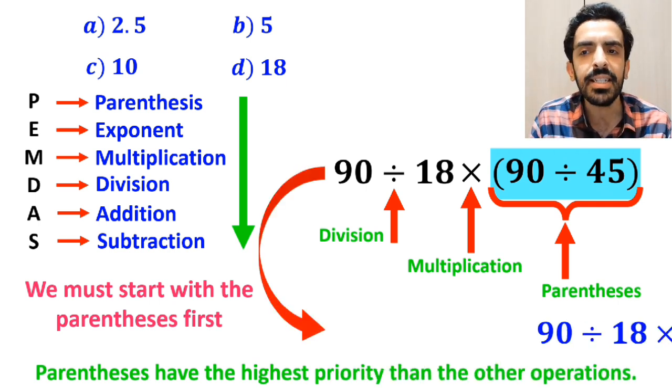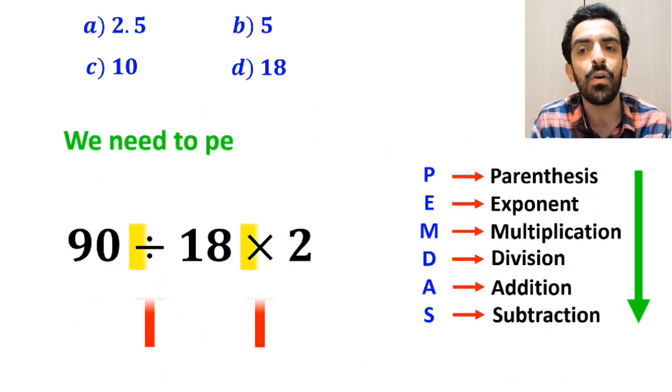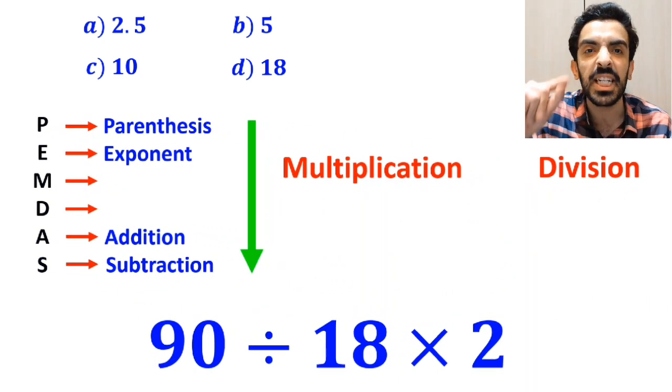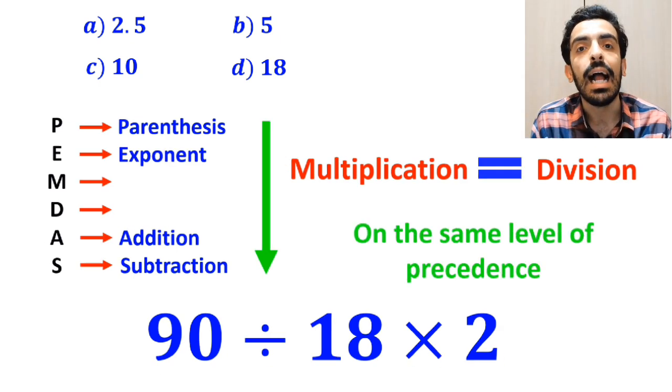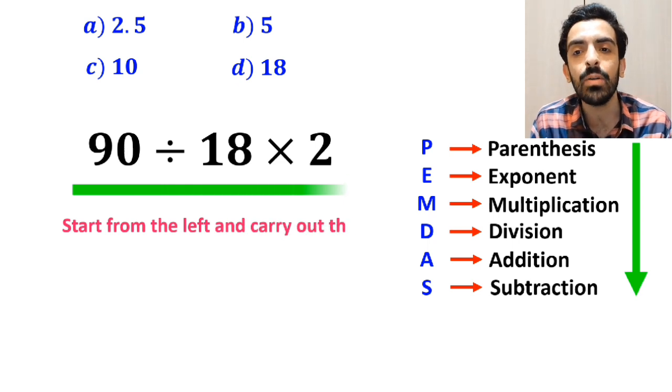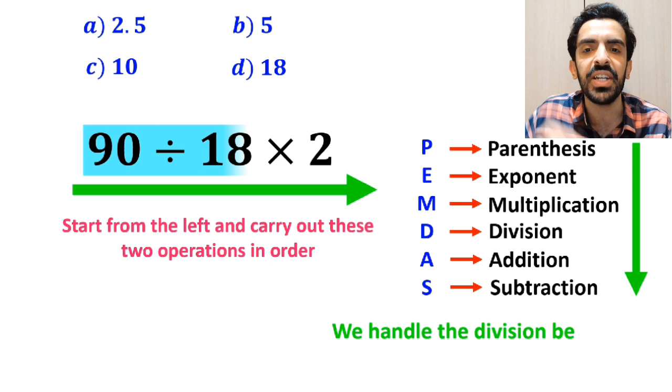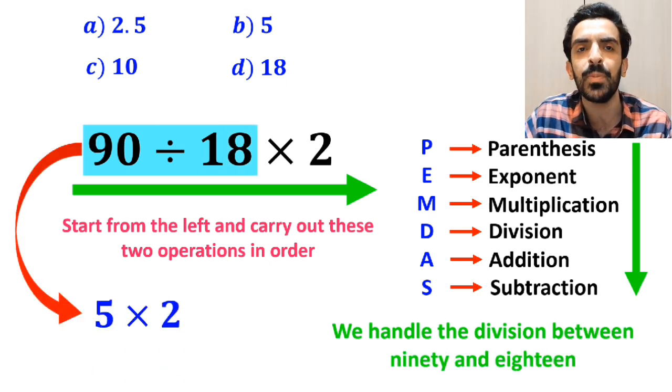So we can write this expression as 90 divided by 18 then multiply by 2. Now we need to perform the division and multiplication. However, it's very important to keep in mind that multiplication and division are on the same level of precedence. In this case, the best approach is to start from the left and carry out these two operations in order. So first we handle the division between 90 and 18, which simplifies this expression to 5 multiplied by 2.